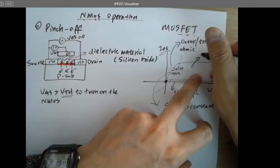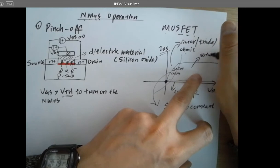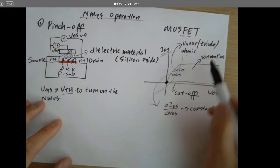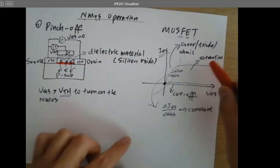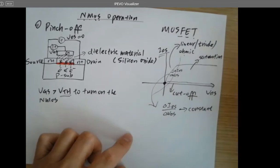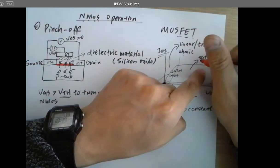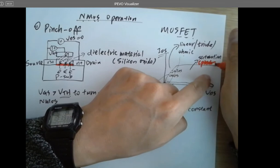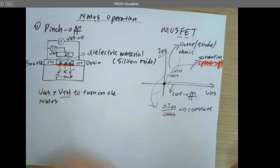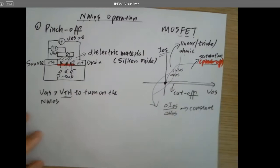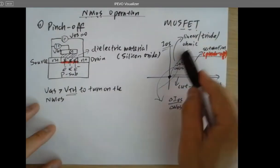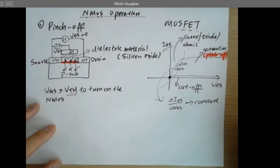This region is called the saturation region for the NMOS, and here's the cut-off region — three different regions. For the saturation region, there's another name: it's called the pinch-off region. Why is it called the pinch-off region? Because the channel is being pinched off during this region.